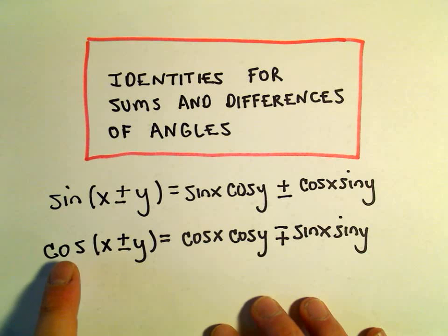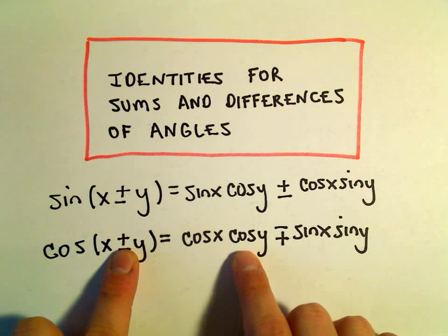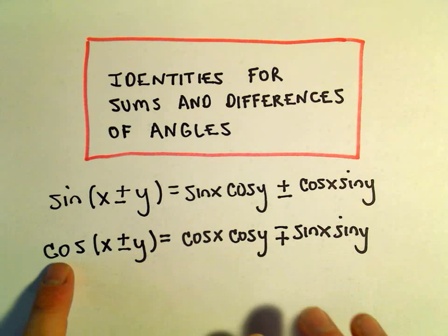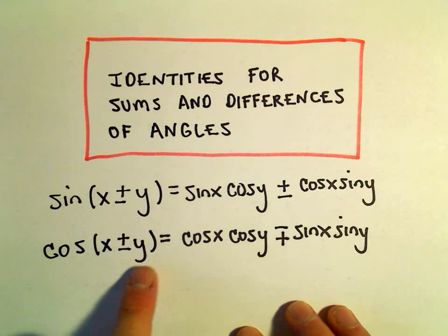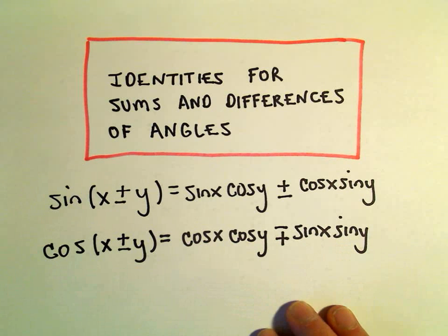For cosine though, it kind of switches. If you have cosine of x plus y, you get cosine x times cosine y minus sine x sine y. And if you have cosine of x minus y, you get cosine x times cosine y plus sine x times sine y.